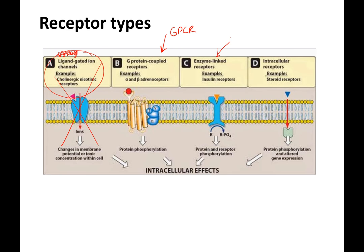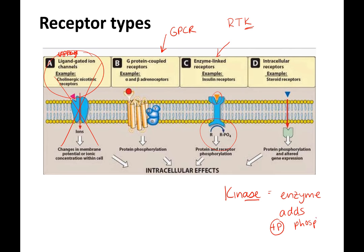We're talking about enzyme-linked receptors, which means once these receptors bind their ligand, a catalytic reaction happens — they're enzymes. The ones we're focusing on are receptor tyrosine kinases. Hopefully you know by now a kinase is an enzyme that adds phosphates to another molecule. So we have receptor tyrosine kinases, which phosphorylate a tyrosine.